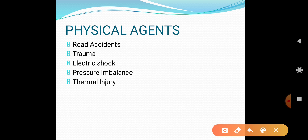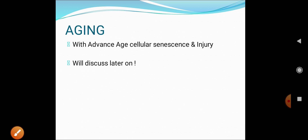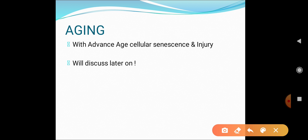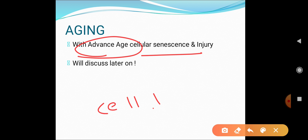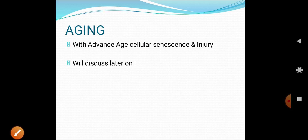The seventh cause is physical agents. The name itself suggests: burns, thermal injury, trauma from road accidents, electrical injury, and pressure imbalance can all cause cell injury. The eighth and final etiological factor is aging — advanced age leads to cellular senescence and gradually causes cell injury. We will discuss aging-related cell injury in detail in the next video.